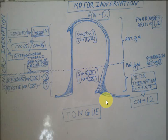That's it about the innervation of the tongue — a very frequent exam question. Motor innervation is the same all over: nerve 12. Sensory innervation differs: anterior two-thirds uses nerves 5 and 7; posterior one-third uses nerve 9. I'll make videos on many small topics and try to present them in an easy-to-learn way. Don't forget to subscribe, rate, comment, and like. See you next time, goodbye!